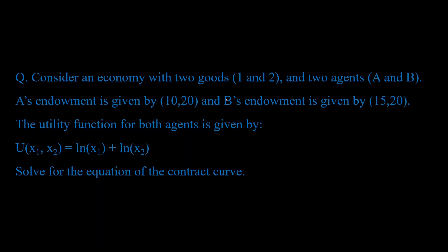All right, let's take a look at this question. You're given an economy with two goods 1 and 2 and two agents A and B. You're given A's endowment and B's endowment. The utility function is the same for both agents. It is given by log of x1 plus log of x2. We have to solve for the equation of the contract curve.